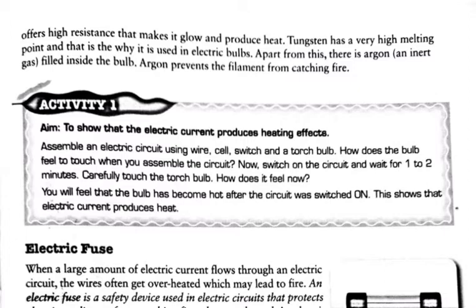Apart from this, there is argon — an inert gas — filled inside the bulb. This inert gas, argon, prevents the filament from catching fire. Burning is a chemical process, and if we used any reactive gas — a gas which is not inert — it may react with the filament and the filament would burn.